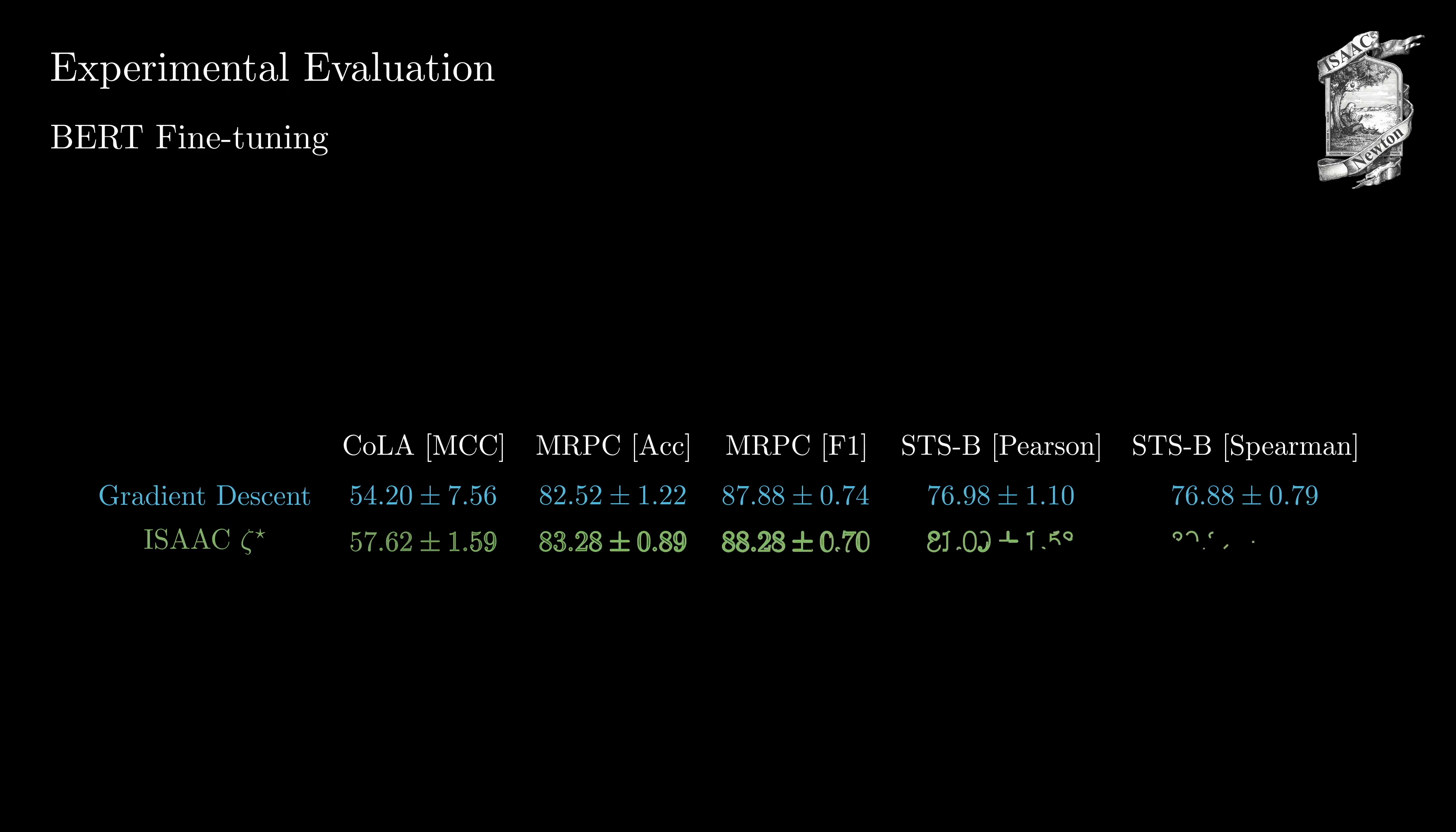For some larger scale experiments, we consider BERT fine-tuning on three tasks: CoLA, MRPC and STSB. We can observe that ISAAC outperforms gradient descent also in these large case settings.